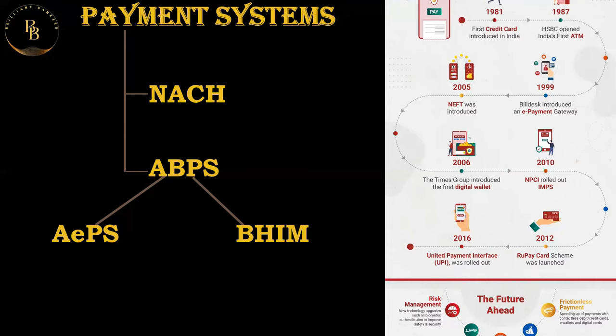NACH offers two types of transactions: credit (pushing funds) and debit (pulling funds). A NACH debit is when an amount is debited from your account — for example, EMI payments, loan repayments, or automatic bill payments for electricity, mobile, or internet. A NACH credit is when there is a credit to your account, such as your salary, dividend income, or interest income from banks.